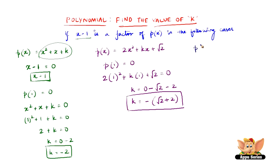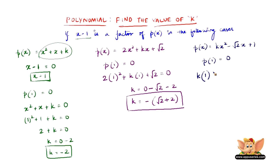Let us look at another p of x, which is equal to kx squared minus root 2x plus 1. Again p of 1 should be equal to 0, so kx squared minus root 2x plus 1 equals 0. Substituting x equals 1, we get k times 1 squared minus root 2 times 1 plus 1 equals 0. So k minus root 2 plus 1 equals 0, and k times 1 squared is k.